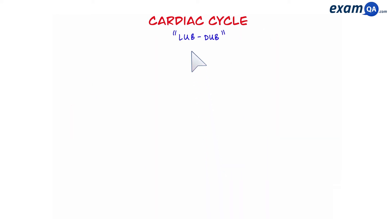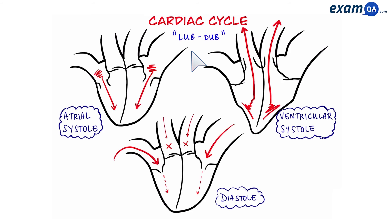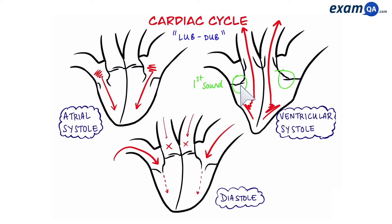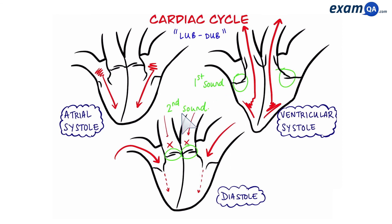We all know that the heart has a characteristic lub-dub sound. Looking at this overview of the cardiac cycle, the events responsible for that lub-dub sound are: the first sound is caused by the atrioventricular valves closing during ventricular systole, and the second sound is caused by the semilunar valves closing during diastole.